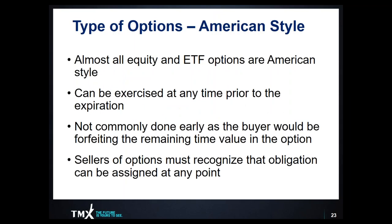There are also two different types of options when it comes to exercise and assignment, or what we refer to as settlement. The first is American style — the most common type — where almost all equity and exchange traded fund options can be exercised at any time prior to the expiration date. It's not a common practice to exercise early because as the option buyer you would be forfeiting remaining time value. However, as the option writer, there is the potential that you could be assigned to fulfill your obligation at any point within the life cycle of the contract.